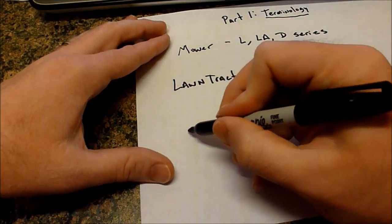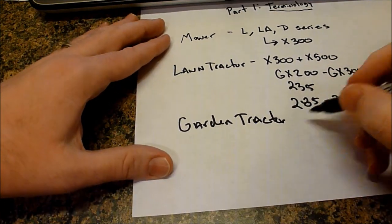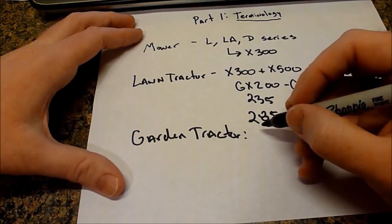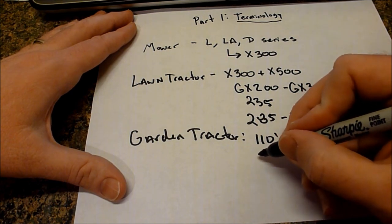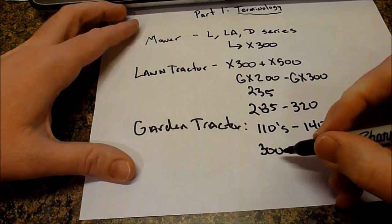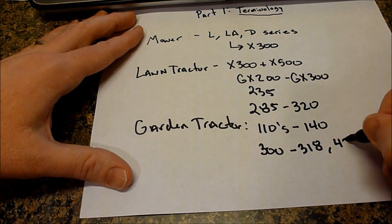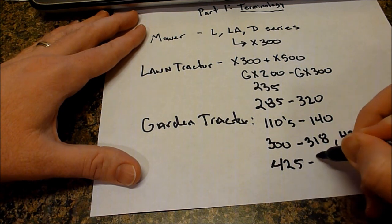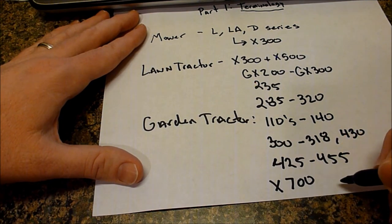And then you have the garden tractor. So you got your garden tractors. This would be your traditional, and I'm going to go quite a bit older on these. These will start out at the 110s, which were released in 1960s. And then you go up through the 300 series, the 140s. You have the 300 series. So this will include the venerable 318s, up all the way through really the 430s. Those would all be garden tractors. And then you have the 425 through 455s. And then you have the X700 series.